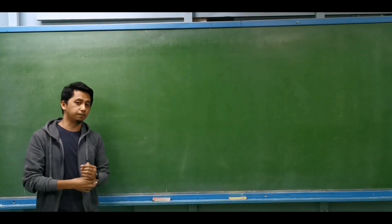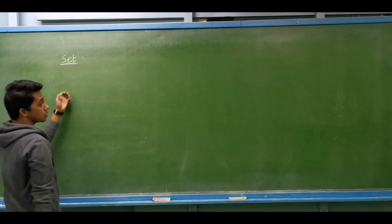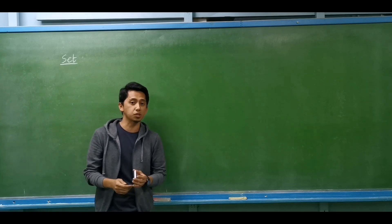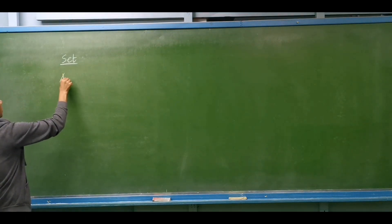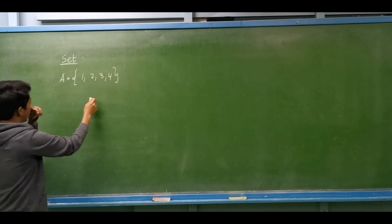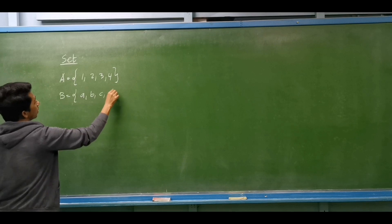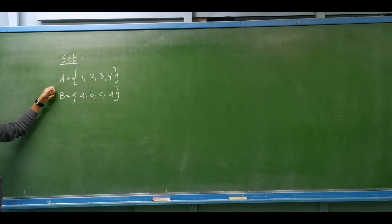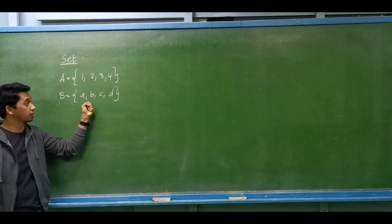Good day. Let us discuss our first topic: the set. Basically, a set is the collection of any objects of any kind. It can be a group of objects having the same characteristics or properties. For example, we have set A with elements 1, 2, 3, 4. Another example, set B with elements A, B, C, D. For grouping we use brackets, and for the name of the set we use capital letters. This is one way to present a given set — the name of the set and its corresponding elements.